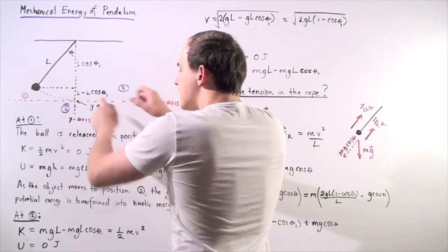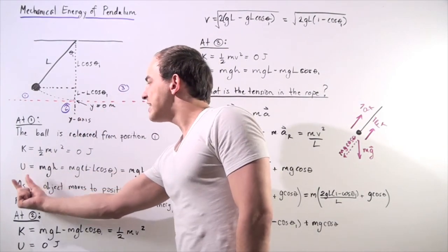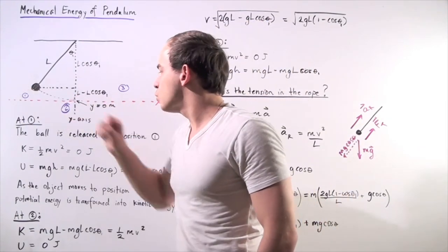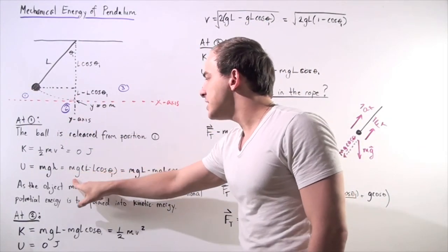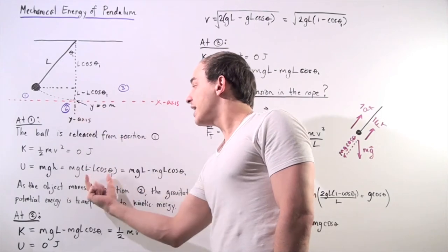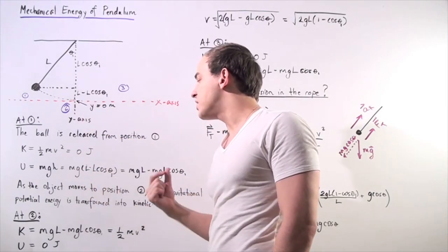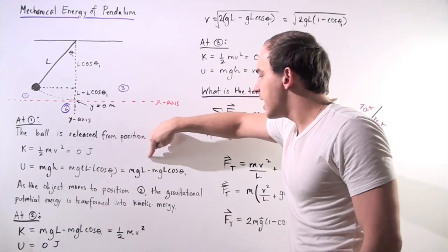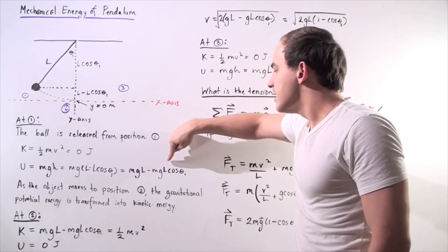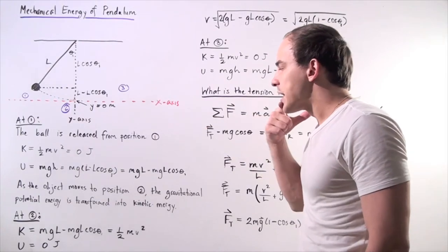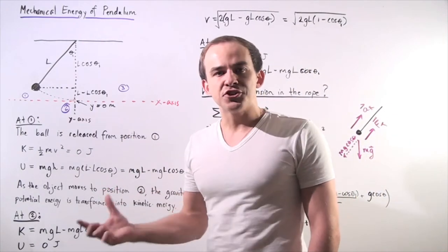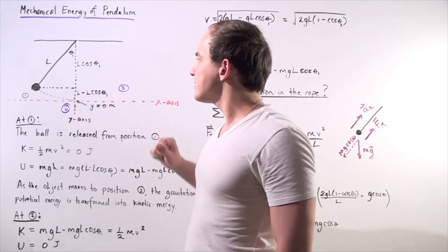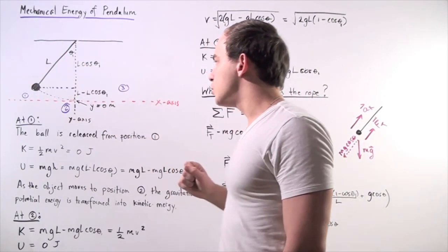The height of the ball is found by subtracting l cosine theta one from l. So the gravitational potential energy at position one is m times g times (l minus l cosine theta one), which distributes to mgl minus mgl cosine theta one. This is the maximum gravitational potential energy of the ball, found at position one.